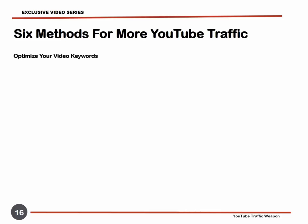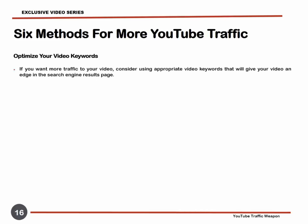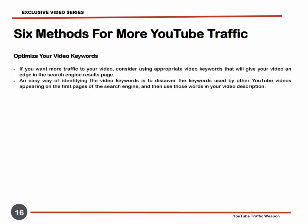Optimize Your Video Keywords. Although it pays to have a good YouTube ranking, it is more rewarding if the classification extends to Google and search engine searches. Many websites' traffic comes from search engines like Google, which create page rankings dependent mainly on the keywords used. Therefore, if you want more traffic to your video, consider using appropriate video keywords that will give your video an edge in the search engine result page. An easy way of identifying the right keywords is to discover the keywords used by other YouTube videos appearing on the first pages of the search engine, and then use those words in your video description.